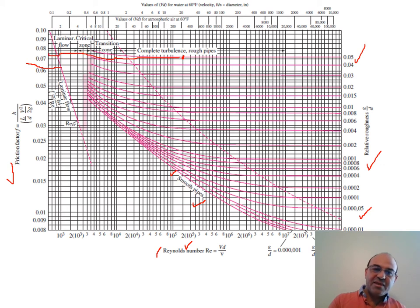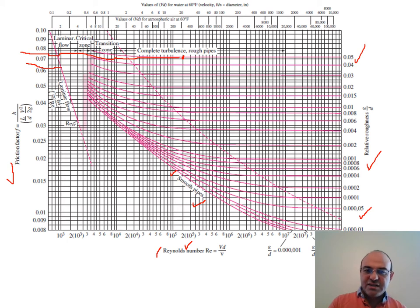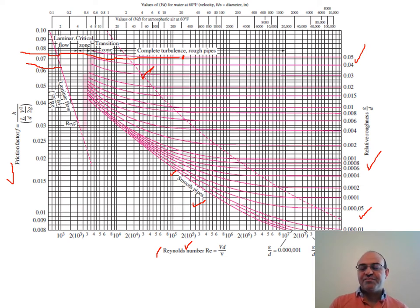For example, for ε/D = 0.05 and Re = 2×10⁵, the friction factor would be approximately 0.75. At large Reynolds numbers, all curves level off and become constant, meaning F becomes independent of Reynolds number and depends only on roughness — this is the 'complete turbulence, rough pipes' regime.